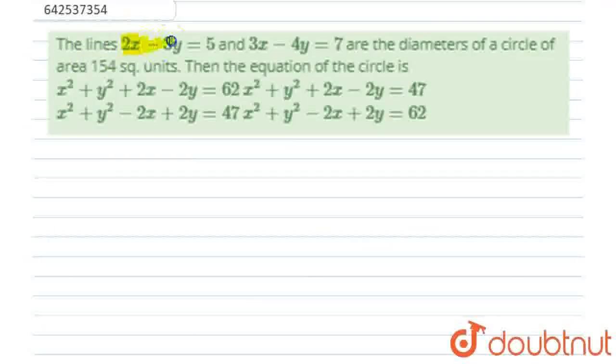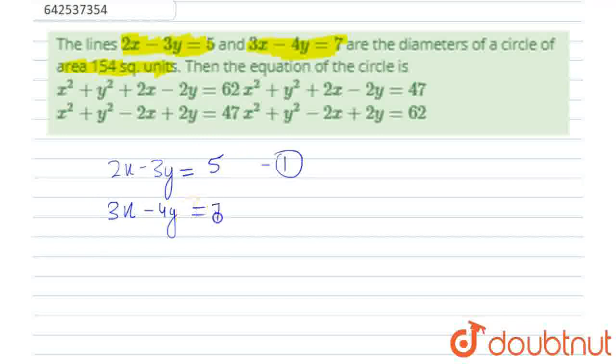The lines 2x minus 3y and 3x minus 4y are the diameters of a circle of area 154 square units. First of all, we need to find the value of x and y. So, first equation is 2x minus 3y equals 5. And second equation is 3x minus 4y equals 7.